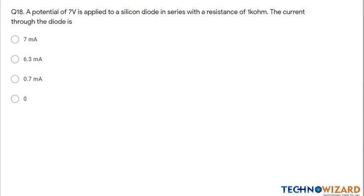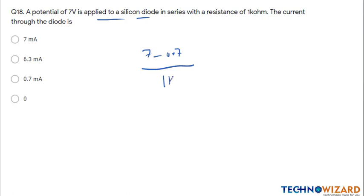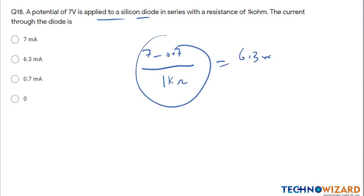Question number eighteen: a potential of 7 volt is applied to a silicon diode. There is a voltage drop of 0.7 volt across the diode, so the current is (7 minus 0.7) divided by 1 kilo ohm equals 6.3 milliampere. Option B is the correct answer.